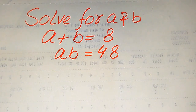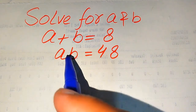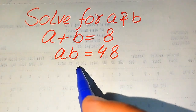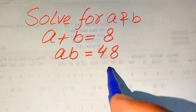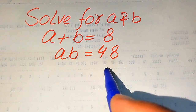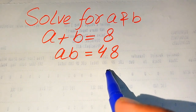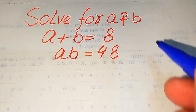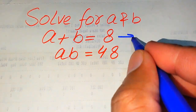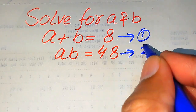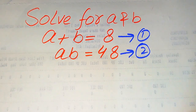Hello everyone. How to solve this problem for the values of a and b if we have a plus b is equals to 8 and a times b is equals to 48, and we solve this problem for all the values of a and b. Here we call this equation number one and this equation number two.